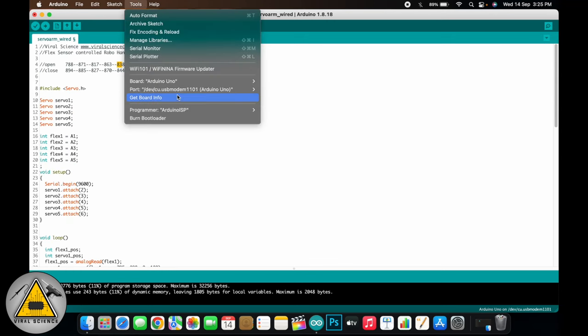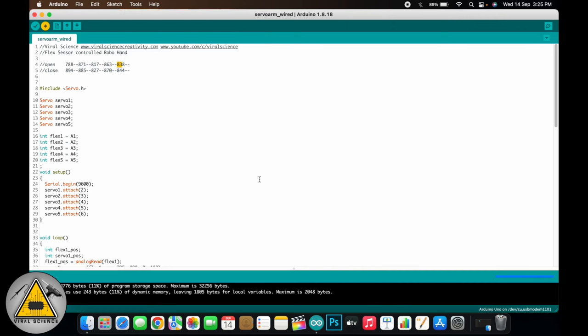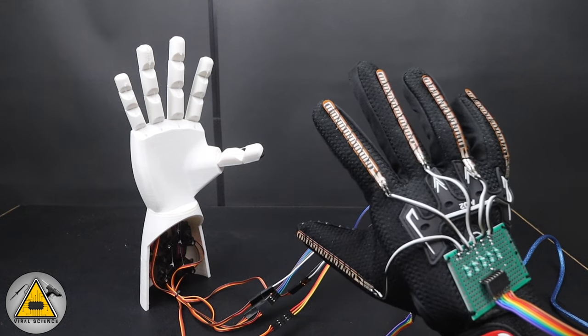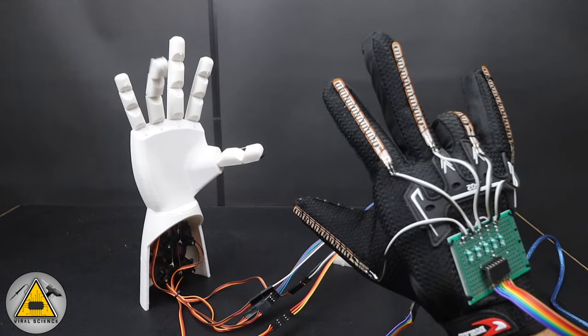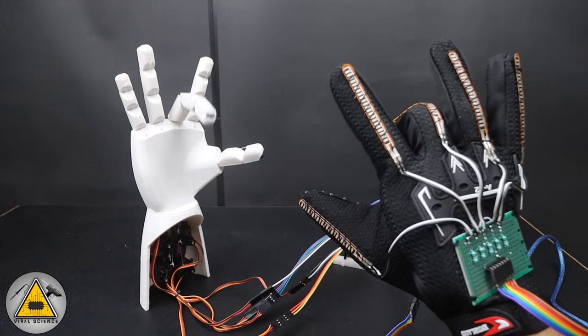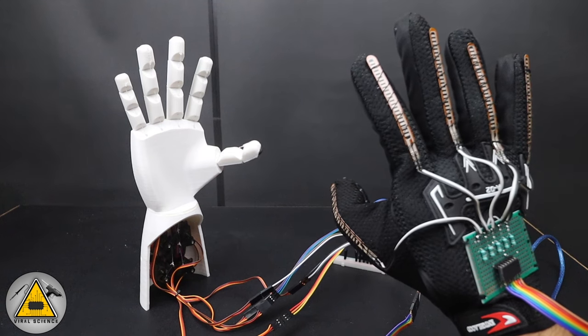So select the board, port, and upload the code. If the servo hand is not responding properly or responding automatically, then you can make some changes in the range of the flex sensor inputs. So if you bend any of your finger, then corresponding finger from the robo hand will also bend.